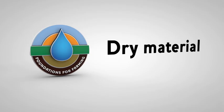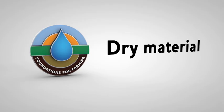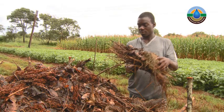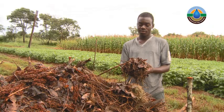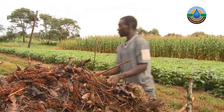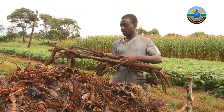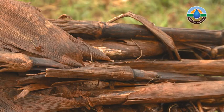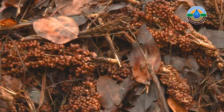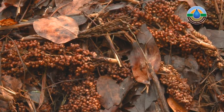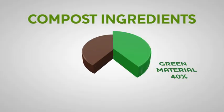Dry materials are also important for bacteria and fungi growth. Dry material should include a percentage of sticks or woody material which allow the compost pile to breathe by giving it structure. Some good examples of dry material are maize stover, leaves, straw or grass sticks, and seed pods. The dry or brown material needs to be 40% of the total materials, but needs to consist of at least 5–10% woody materials.